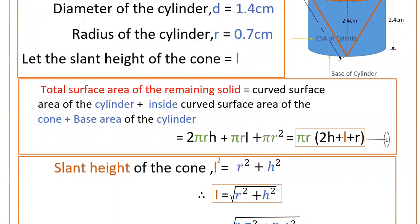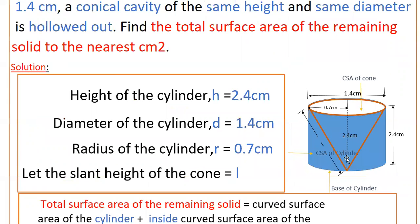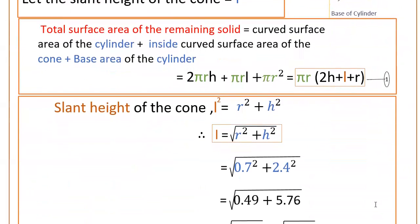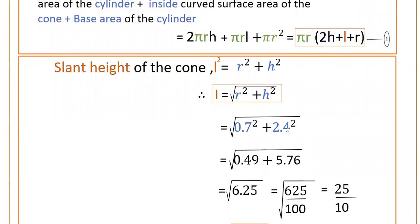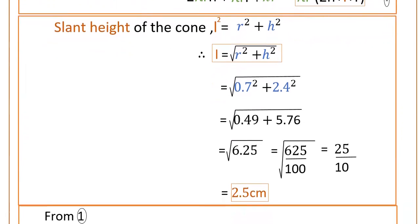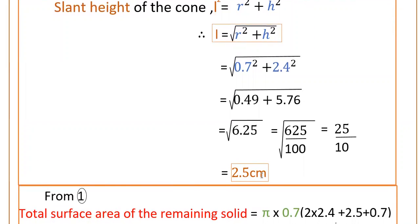We know all the values except L, the slant height. The slant height of the cone is found using Pythagoras theorem on the right triangle: L² = r² + h². Therefore, L = √(r² + h²) = √(0.7² + 2.4²) = √(0.49 + 5.76) = √6.25. Writing 6.25 as 625/100, √625 = 25 and √100 = 10, so L = 25/10 = 2.5 cm.